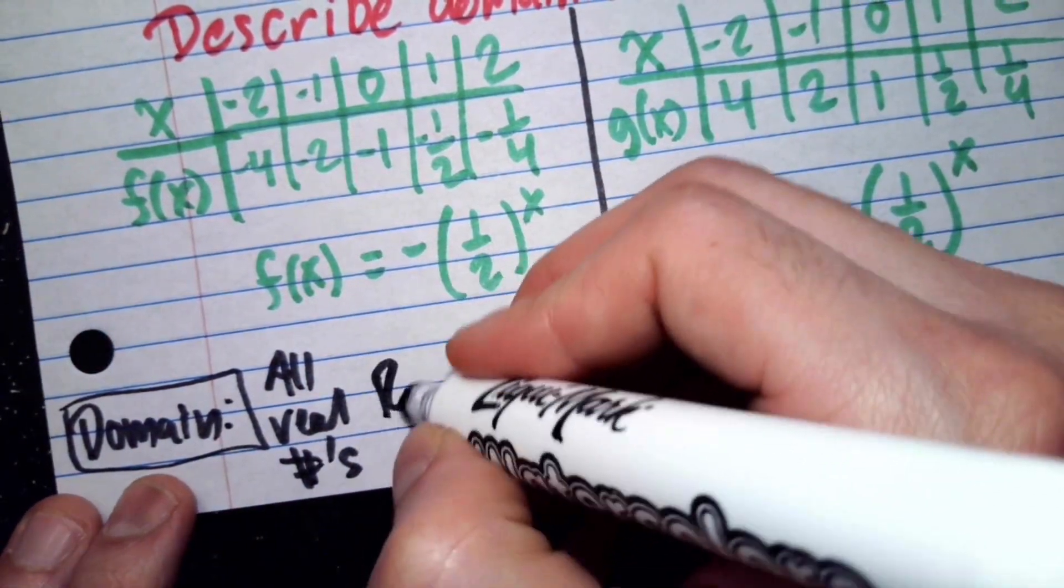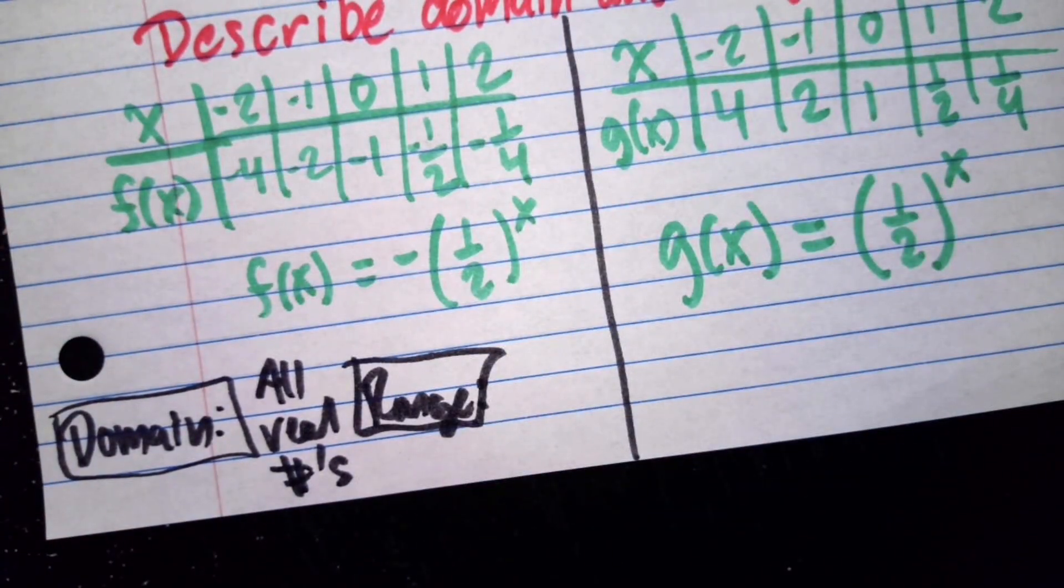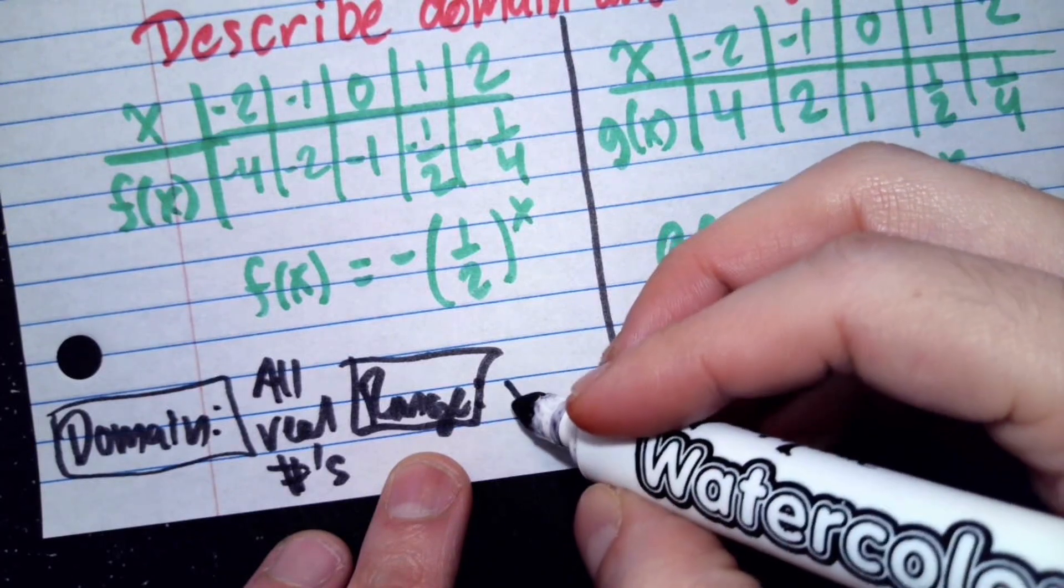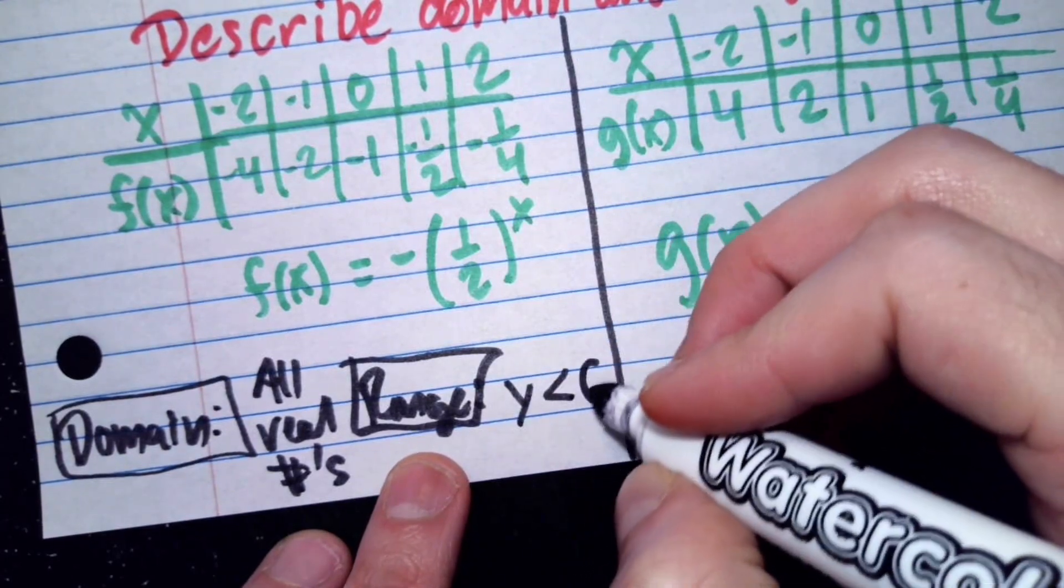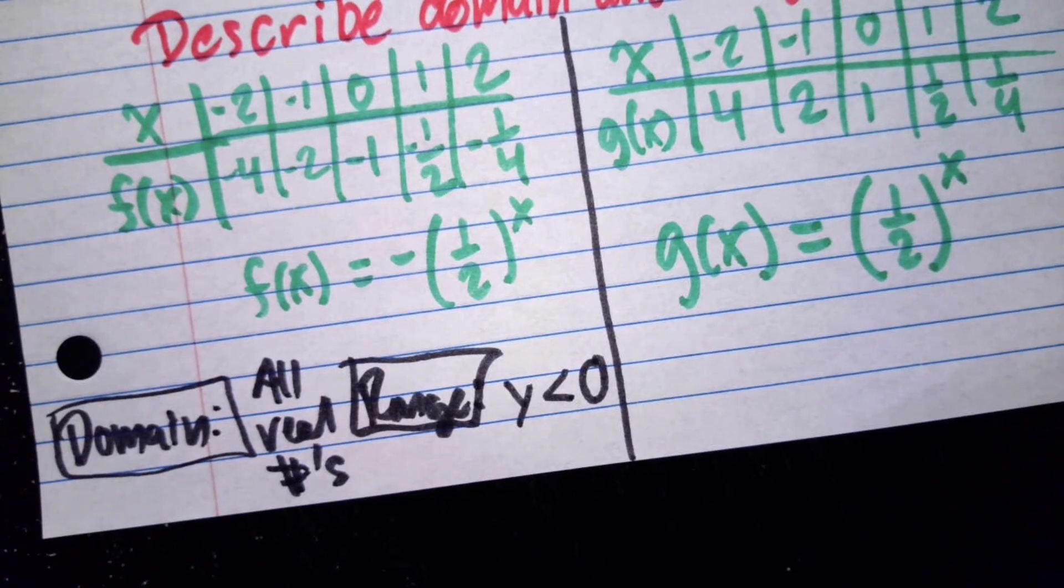And our range, if you look at the graph, if you refer to the graph, you'll notice that it actually never touches any positive number. So it's pointing downward and it approaches 0, but never actually touches it. So we can actually say that my range has to be y is less than 0. So it never actually touches 0, but it always remains in the negative area.